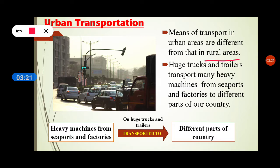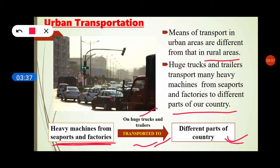In urban areas, huge trucks and trailers transport many heavy machines from seaports and factories to different parts of the country. These heavy machines include agricultural equipment, printing machinery, and drilling equipment, which are transported across the country.